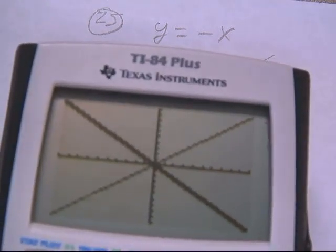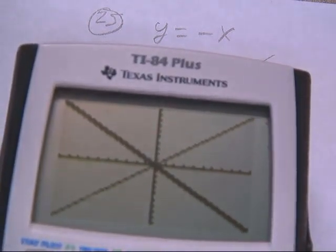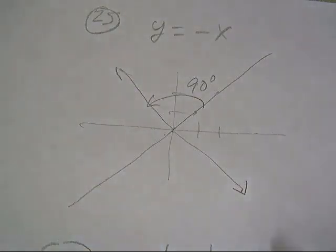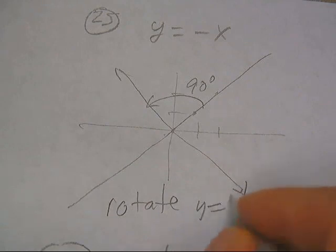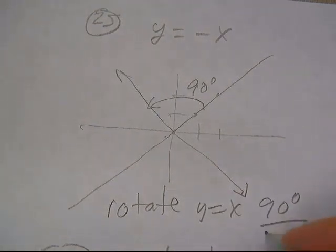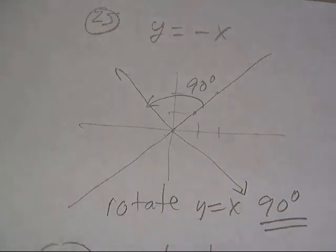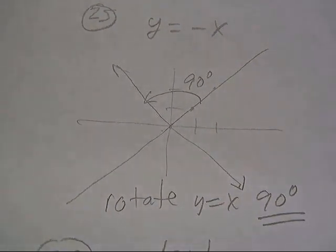We're splitting the quadrants in two on 45 degree angles, and you just want to say on this one: rotate y equals x 90 degrees. So that's more like a rotation than a reflection. And we're good on that one.